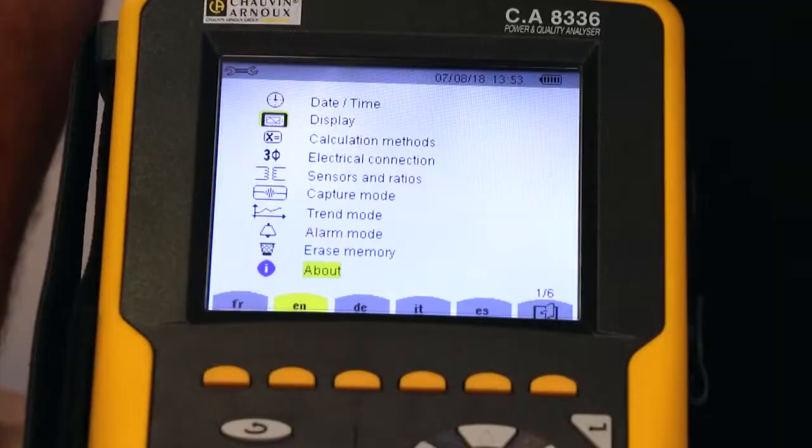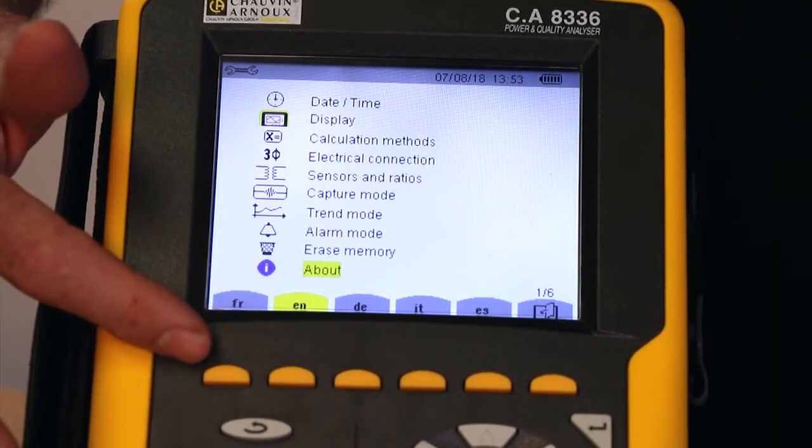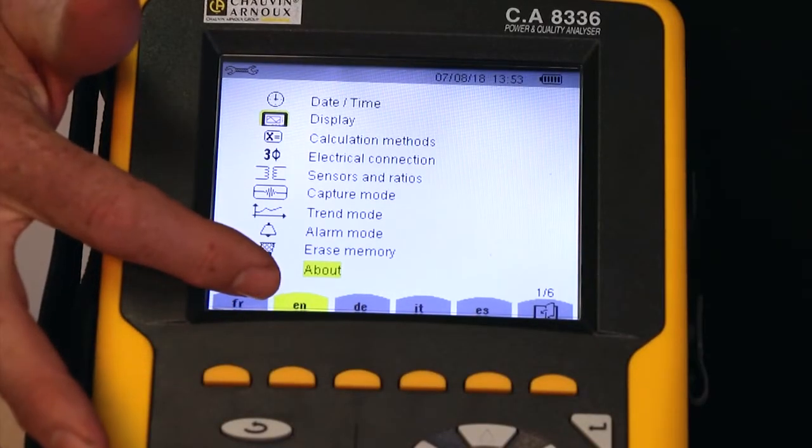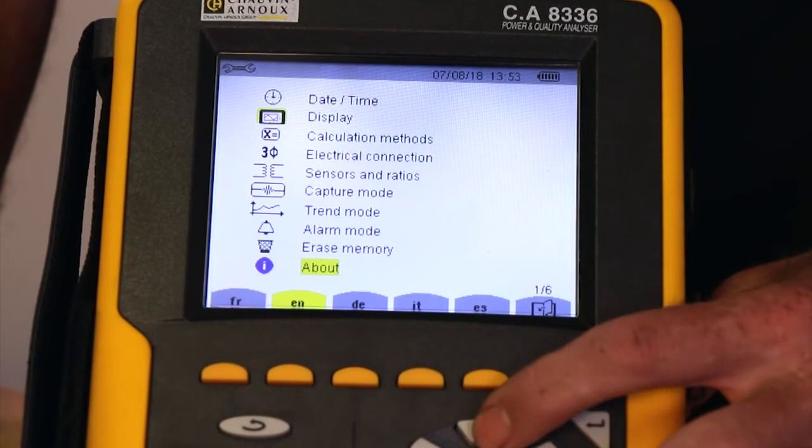You'll also notice the fast keys, but in this particular mode, you can select the different language options. Setting the date and time, display contrast and calculation methods are all self-explanatory.